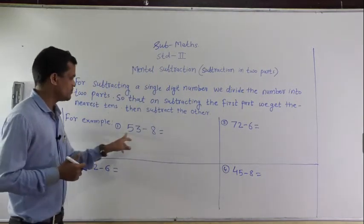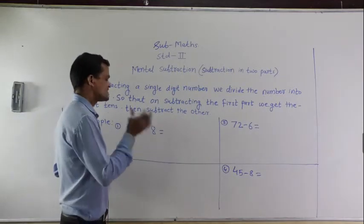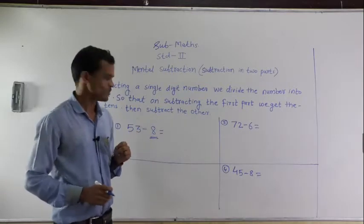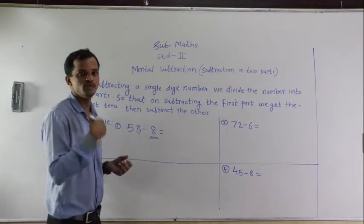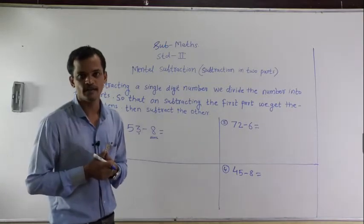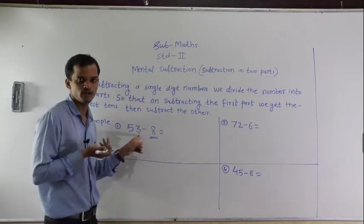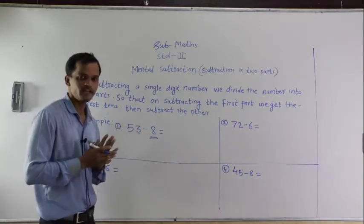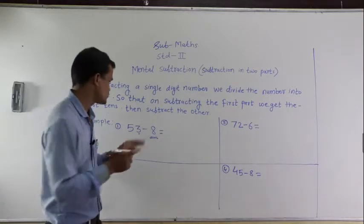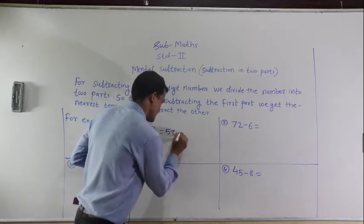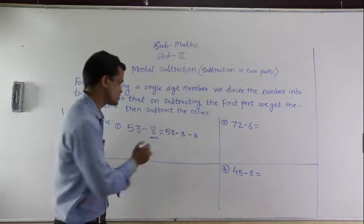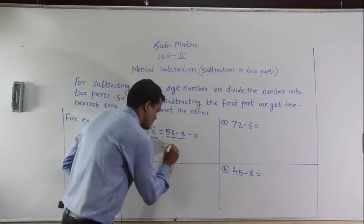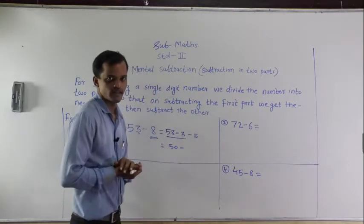See example: 53 minus 8. We will subtract 8 from 53 mentally. Divide 8 into two parts. See which number should be subtracted from 53 so we get the nearest whole ten — that is 3. If we subtract 3, we will get 50. So divide 8 like this: 3 plus 5. Write it as 53 minus 3 minus 5. First do the subtraction 53 minus 3 equals 50, then subtract the next part.